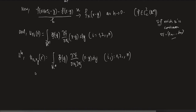This expression on the right-hand side is continuous with respect to x. There is a singularity with respect to y, but I do not care because this is with respect to x. It is a continuous function with respect to x. Since u is a function of x, we can say therefore u is in C²(ℝⁿ).